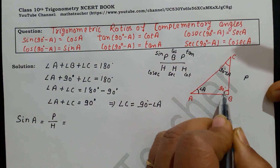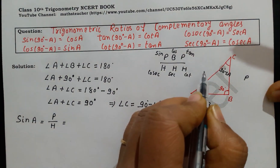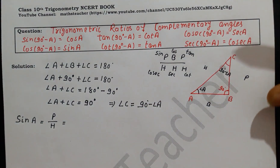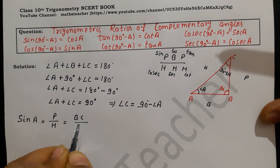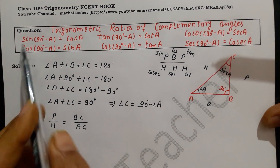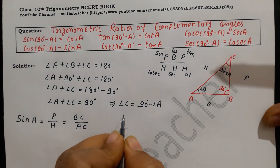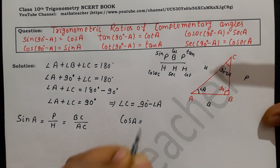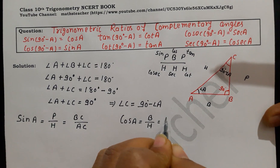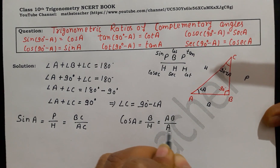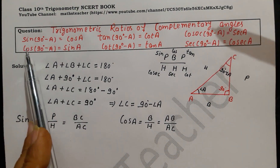So sin A equals perpendicular upon hypotenuse. The perpendicular is BC, the base is AB, and the hypotenuse is AC. So sin A equals BC upon AC. And cos A equals base upon hypotenuse, which is AB upon AC.